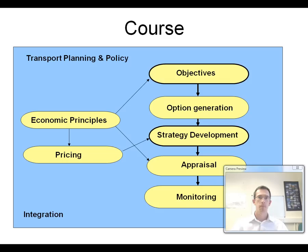This is an outline of the course that you're going to be taking with us. We're going to try and explain the overall approach to transport planning, starting from the basics of deciding what it is that we want to get out of our transport planning system. So we consider the objectives of transport planning — things like improving safety, improving the environment, or making the economy more efficient.